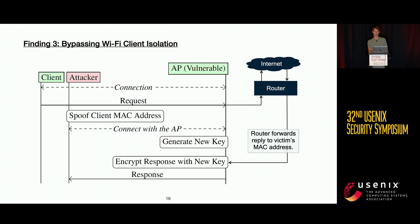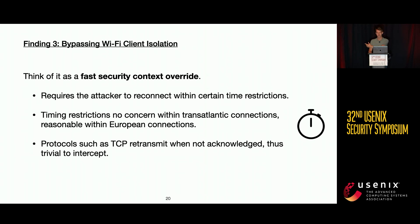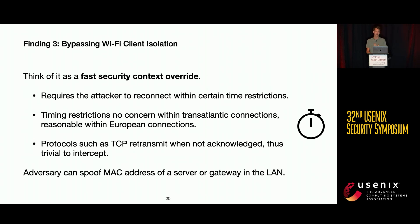When the internet server sends its response — in this case the DNS response — the access point encrypts the data with the new key and sends the response. Instead of going to the original client, it is now sent to the attacker. This is a 'fast security context override' attack. There are timing restrictions, but practically these are not an issue. Additionally, TCP connections retransmit data if unacknowledged, so even if the first attempt is missed, the attacker can receive retransmitted data.